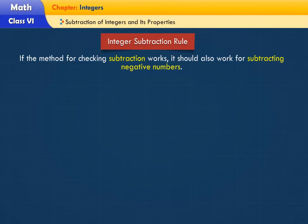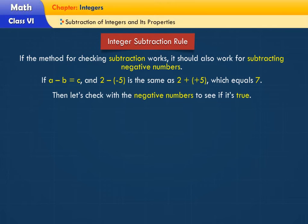If the method for checking subtraction works, it should also work for subtracting negative numbers. If a minus b is equal to c and 2 minus minus 5 is the same as 2 plus plus 5 which equals 7, then let's check with the negative numbers to see if it's true.